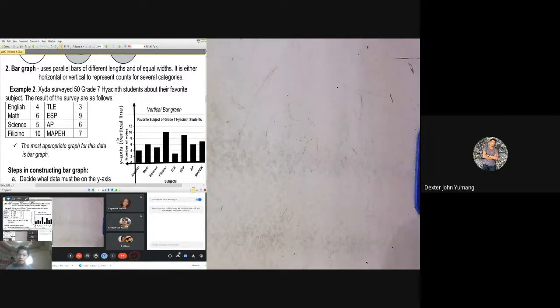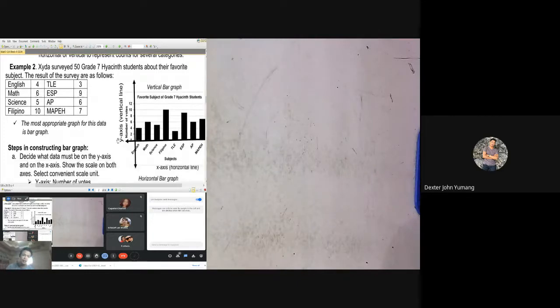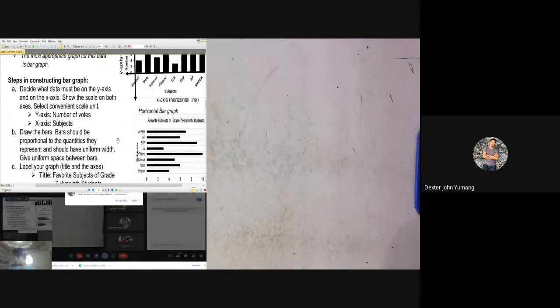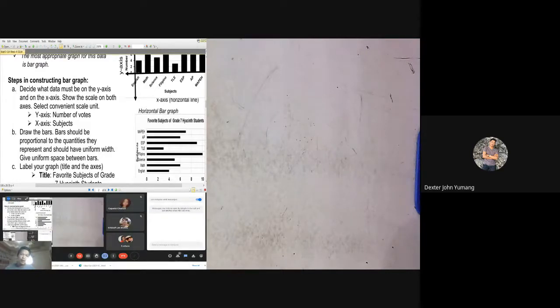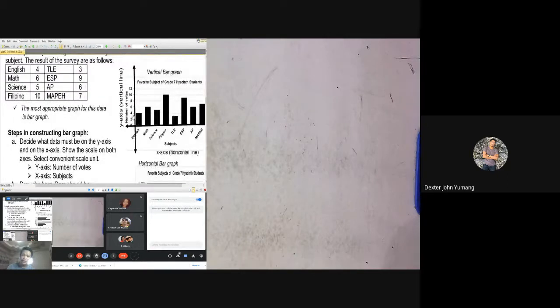Now how are we going to construct this bar graph out of this data? There are three steps. The first step is we are going to write the X and Y axis. It depends on you, usually the X axis is the horizontal one with the non-numbers, while the numbers like 1, 2, 3, 4, 5 and so on are on the Y axis or vertical. Look at our figure, the numbers 0, 2, 4, 6, 8, 10 are the Y axis, while the subjects English, Math, Science, Filipino, TLE, ESP, AP, and MAPE are the horizontal or X axis.